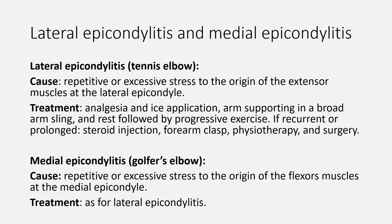Now let's move to pain around the elbow joint. We will talk about two conditions: lateral epicondylitis and medial epicondylitis. Lateral epicondylitis is commonly called tennis elbow. It follows repetitive or excessive stress to the origin of the forearm and hand extensor muscles at the lateral epicondyle. In lateral epicondylitis, inflammation, edema, and microtears occur within the extensor insertion. To confirm it, dorsiflexion of the pronated wrist against resistance will reproduce symptoms.